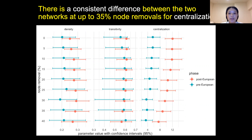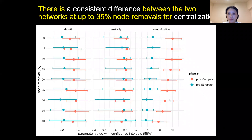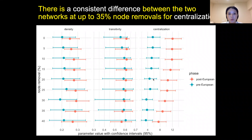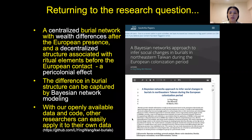Because we have different numbers of burials from the two time periods, we also conducted vertex bootstrap to understand the sample size effect on our models. The basic idea is to remove nodes at certain percentages — from 5% to 40% — from both networks using resampling. The results show a consistent and obvious difference between the two networks at up to 35% node removals for the centralization variable, but for transitivity and density we see a great overlap, indicating no difference there.